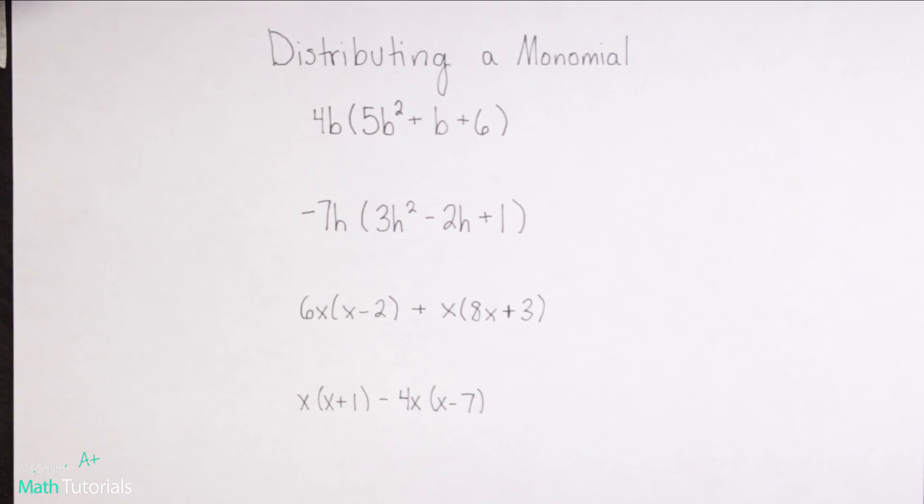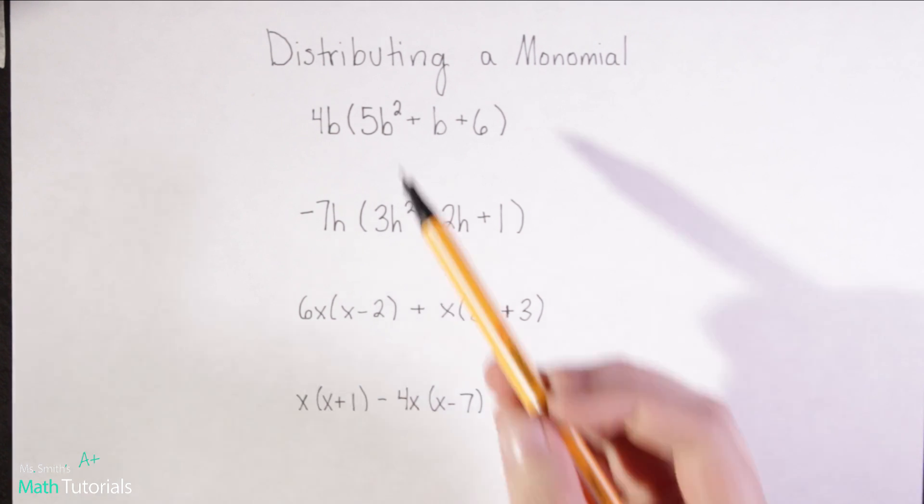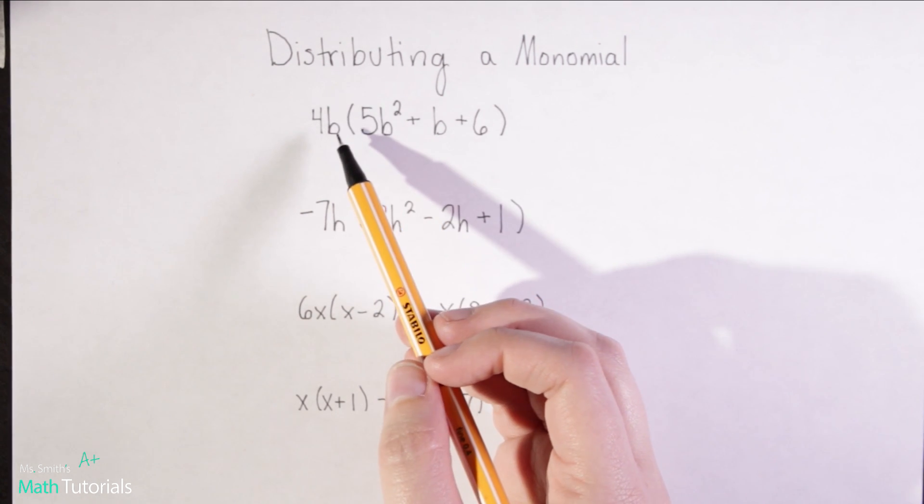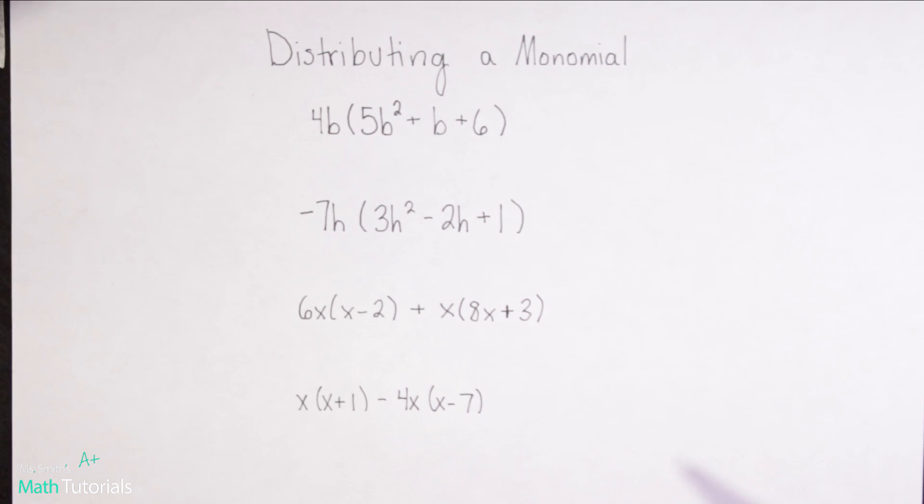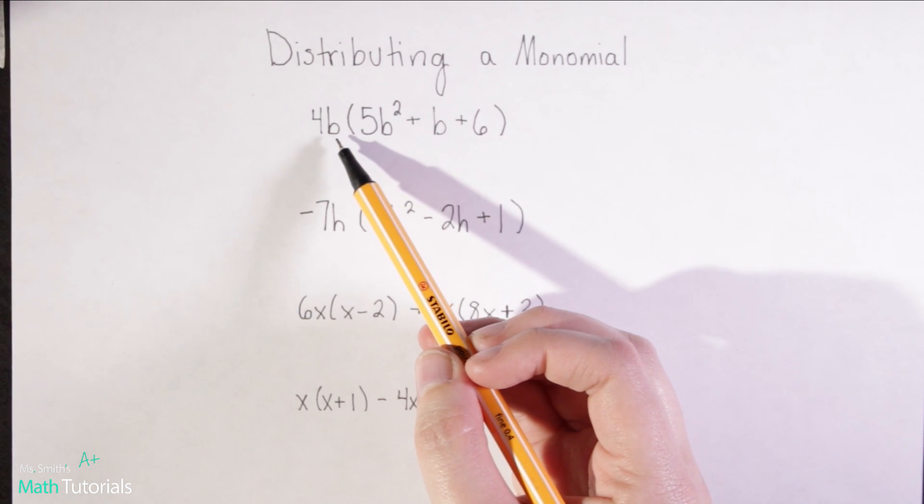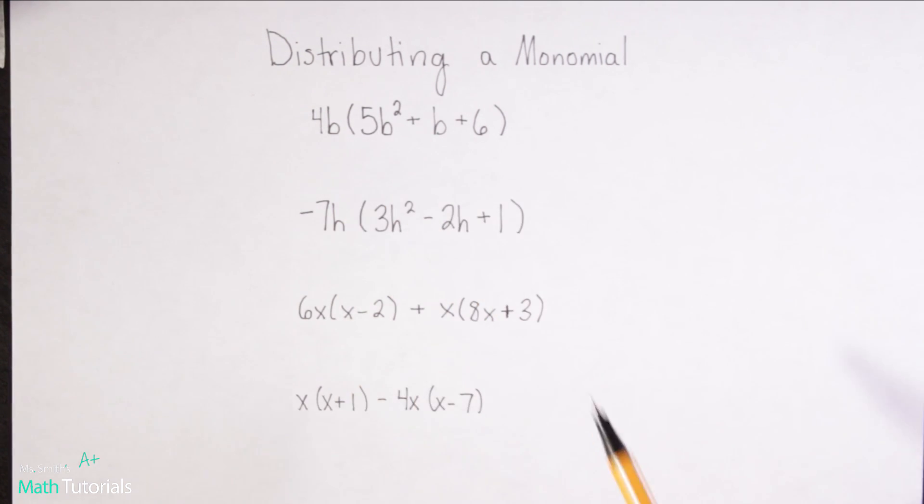In my last video we touched on distributing where we had a set of parentheses with either a 1 or a negative 1 outside. In this video we're going to look at what happens when I have a number or number-variable combination instead of 1 in front of the parentheses. It works really the same way, it's just something that you have to practice with. Down here we'll look at what happens when you have to distribute twice within the same problem and then potentially combine like terms.